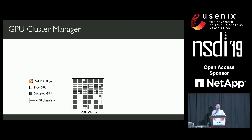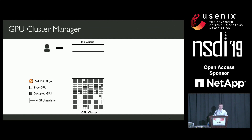Let's first see how a GPU cluster manager looks like. Assuming we have a GPU cluster with multiple GPUs available from a single machine, users are submitting their training jobs into the cluster in an online fashion. The resource requirements of the training jobs—especially the GPU requirements—are specified by users when they are submitting.